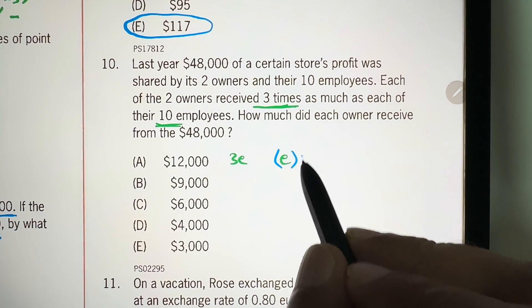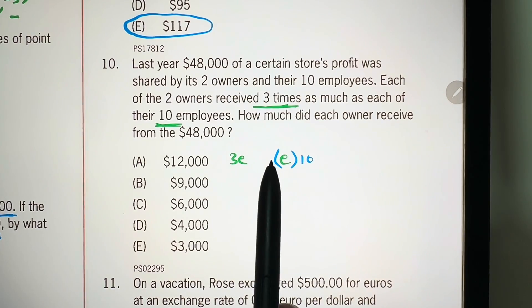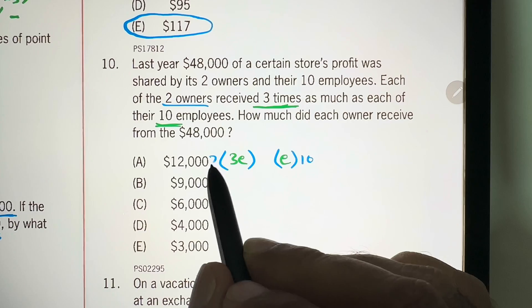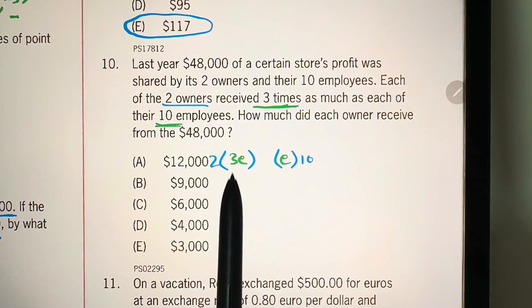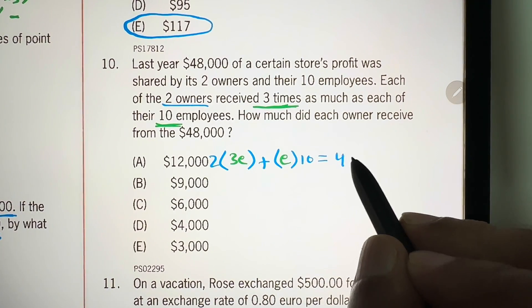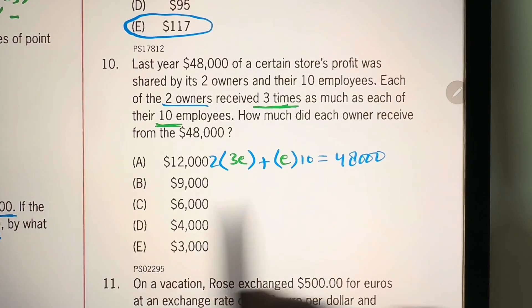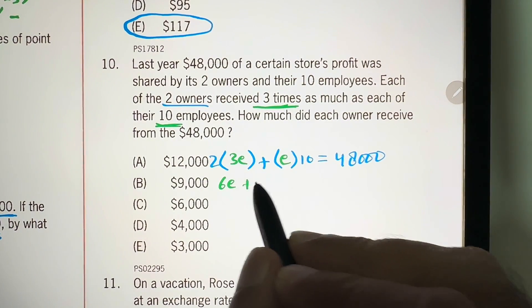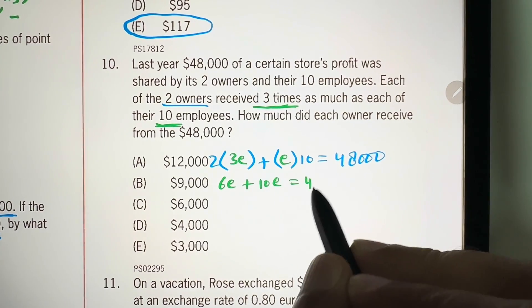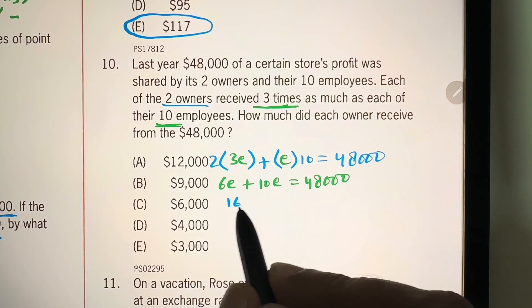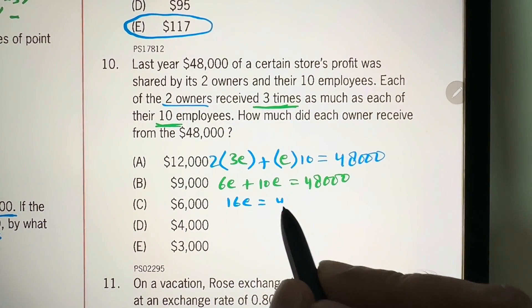So, E times 10 is all the amount that the employees will get, and we have two owners. So, two times this is what both owners collectively will get. And if we add these two amounts, it is the total profit, that is 48,000. Now, two times three is six, 6E plus this is 10E is equal to 48,000, and we have 16E is equal to 48,000.